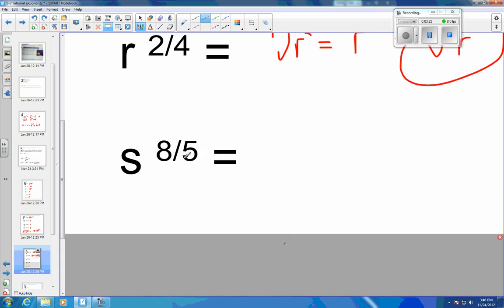So s to the 8/5 power. Oh, it's getting uglier and uglier every time we look at this thing. So this is going to be s to the 5/5 times s to the 3/5, and this is probably the easiest way for you to look at this. So 5/5 is just 1, so that's going to be an s. And then we're going to have the 5th root of s to the 3rd, and that's going to be completely reduced.